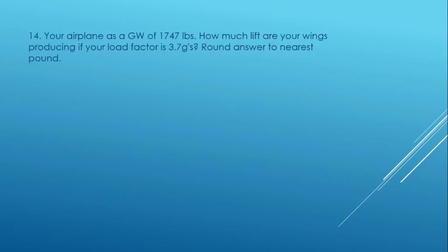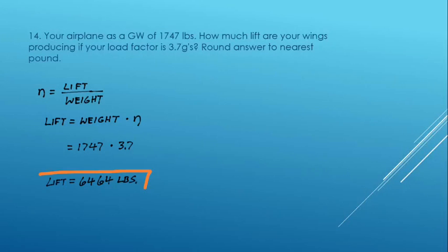This is just a load factor problem. You have 1,747 pounds. Since load factor is equal to lift divided by weight, we could figure lift then is equal to weight times load factor, or 1,747 pounds times 3.7 G's. So at a load factor of 3.7 G's, if your gross weight was 1,747 pounds, your wing would be producing 6,464 pounds of lift.